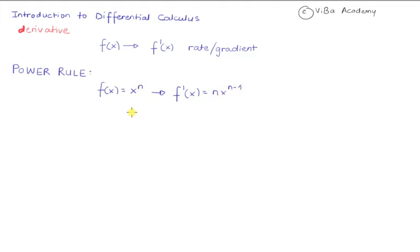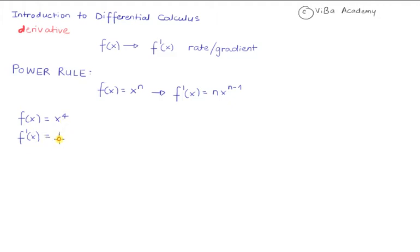So let's look at a few quick examples. Let's say the function that we're looking at is x raised to 4 and we want to find its derivative. Well, its derivative f prime of x, according to the power rule, would be 4 times x to the power of 4 minus 1, which is 4x cubed. And that's it.